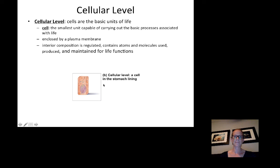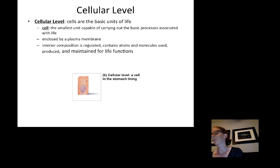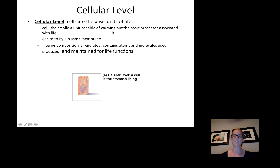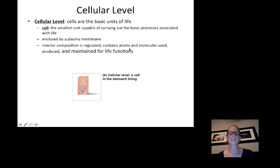Chemicals and molecules come together as the building blocks of cells — the next level is cellular. Cells are the basic unit of life and the smallest unit capable of carrying out the basic processes associated with life. They are enclosed by a plasma membrane made of phospholipids, and their interior compartment is regulated, containing the atoms and molecules used to produce and maintain life functions.